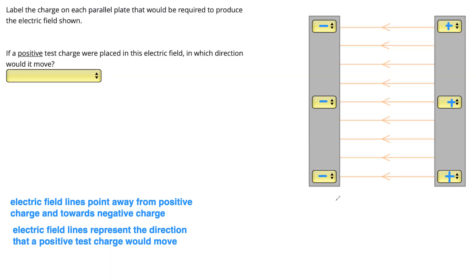So this plate must be positively charged. And again, what direction would a positive test charge move? If we placed a positive charge here, we know it's going to move along the field lines, so it's going to go to the left. You could also think of it as attracting to the left plate because it's negative and the charge is positive — they're opposites, so they attract. So it's going to move to the left.